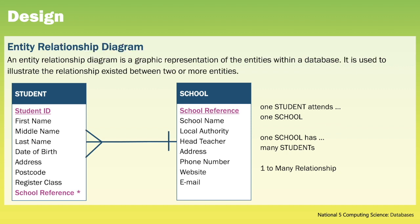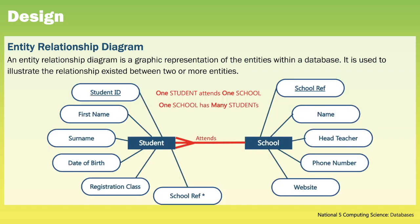This now gives us an entity relationship diagram. The entity relationship diagram is a graphic representation of the entities within a database and is used to illustrate the relationship that exists between two or more entities. You'll see that the primary key is underlined and the foreign key has an asterisk next to it. You may see an entity relationship diagram presented in this manner or in another manner where the attributes surround the entity.